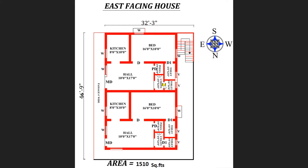A utility area of 6 feet by 4 feet is also provided along with a common toilet of dimension 4 feet by 4 feet. So in this one BHK plan, we have one common toilet and one attached toilet for the bedroom, along with the kitchen and hall. This completes the first portion plan.